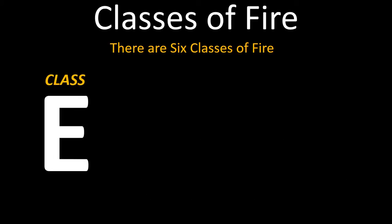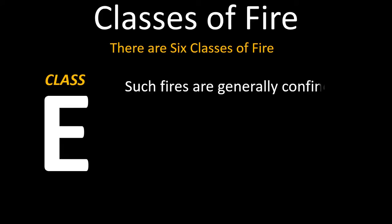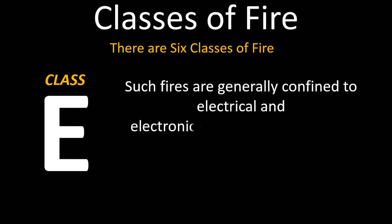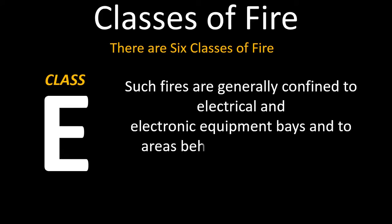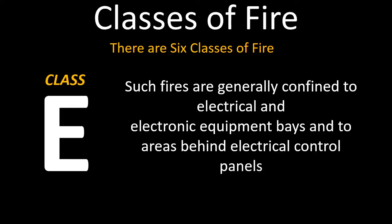Class E fires are those that involve energized electrical equipment. These fires require special care because of the dangers from the electricity in addition to those from the fire itself. Such fires are generally confined to electrical and electronic equipment bays and areas behind electrical control panels. Since the initial stages of electrical equipment fires are usually preceded by a large amount of smoke, these areas of an aircraft are generally monitored by smoke detection systems.